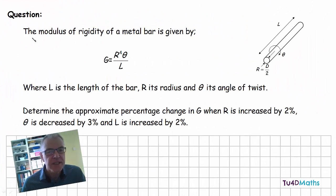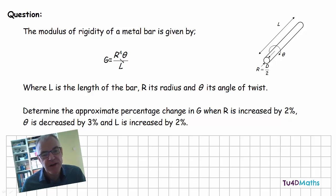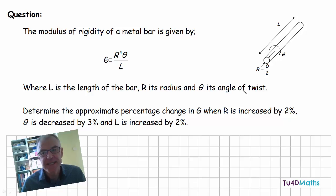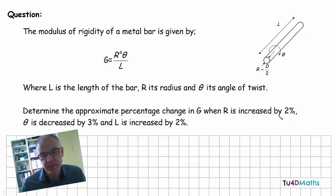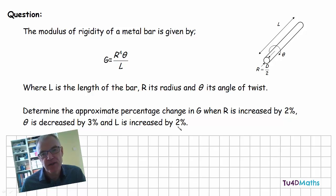In this question we are told that the modulus of rigidity of a metal bar is given by g = r⁴θ / l, where l is the length of the bar, r is its radius, and θ is the angle of twist. We are asked to determine the approximate percentage change in g when r is increased by 2%, θ is decreased by 3%, and l is increased by 2%.